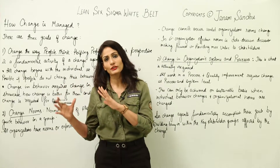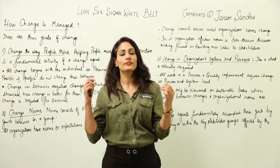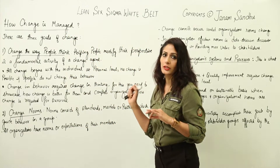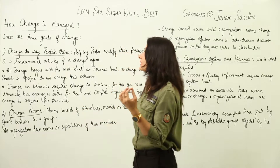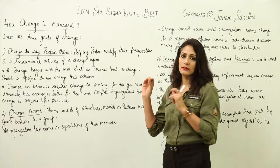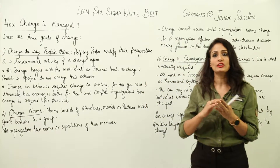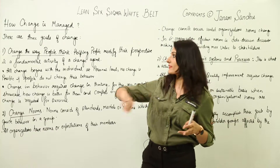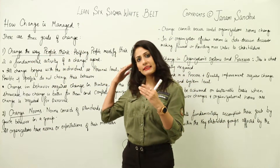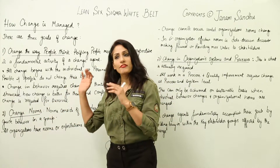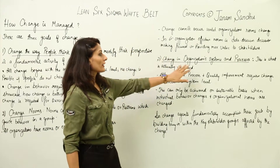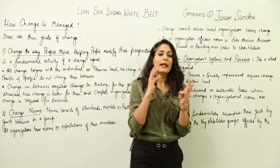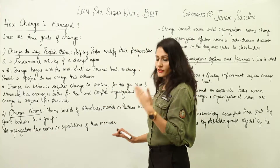Even if you bring change into an organization, the big question is how you manage that change. Change agents have three goals to accomplish in order to convert any organization into a Six Sigma organization. The first goal is to change the way people think. The second is to bring change in the norms. And when those two are done, we can expect the third — change in the organization's systems and processes.